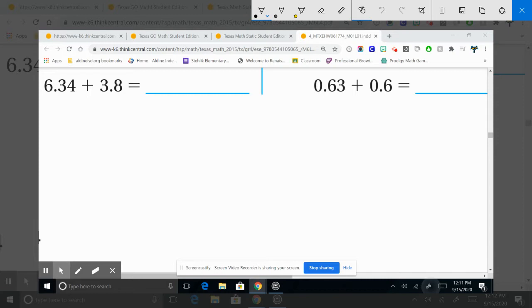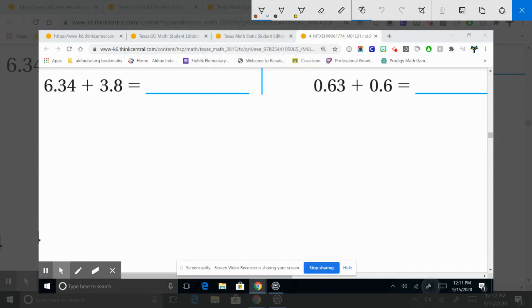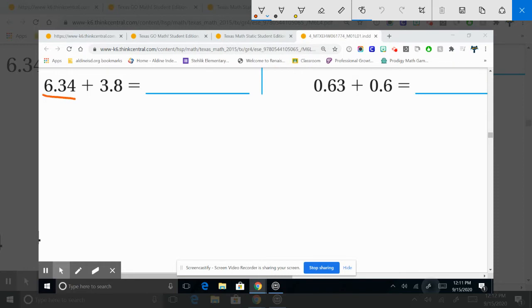Vamos a sumar decimales el día de hoy. Vamos a empezar con el primer paso. Tenemos seis y treinta y cuatro centésimas, y tres y ocho décimas. So we need to make a place value chart.